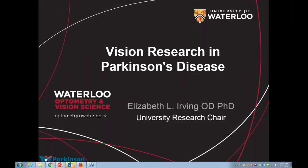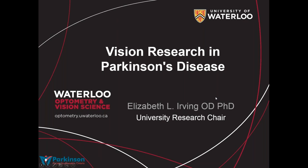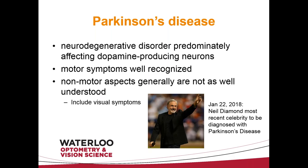This is a presentation on vision in Parkinson's disease and some of the research we've been doing in that regard. Parkinson's disease is a neurodegenerative disorder predominantly affecting dopamine-producing neurons. The motor symptoms are fairly well recognized and we're not going to talk about that today. What we are going to talk about are some of the non-motor aspects, which are not as well understood — particularly visual symptoms.